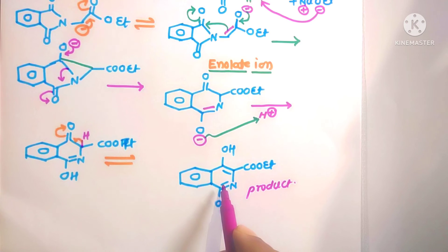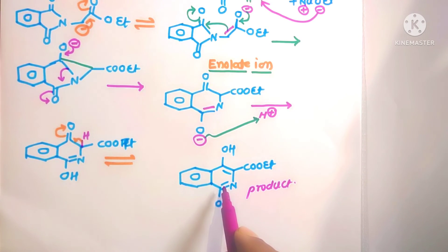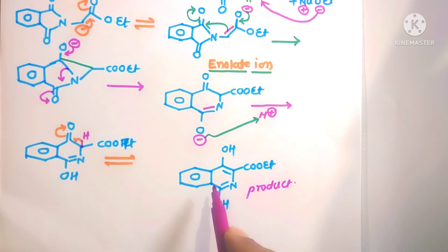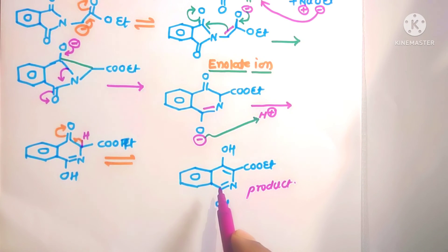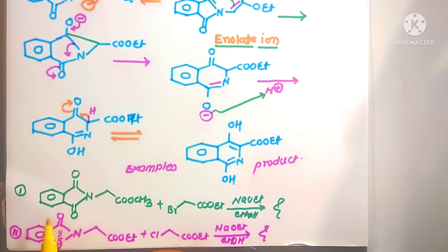These are the final products of this reaction. At the start we used a five-membered heterocyclic nucleus, and in the final product there is conversion of the five-membered ring to a six-membered ring. This is the ring expansion example of the Gabriel-Coleman rearrangement reaction. Now there are two practice problems — find the correct mechanism as well as the correct product for these two examples.